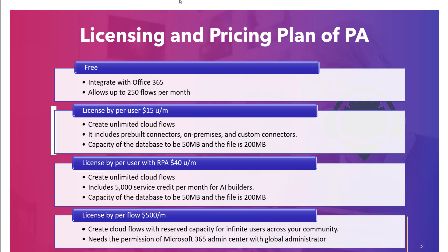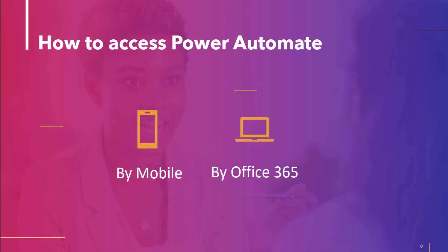Let's see how to access Power Automate. We can access Power Automate in two ways: one is by mobile and the other is via Office 365.